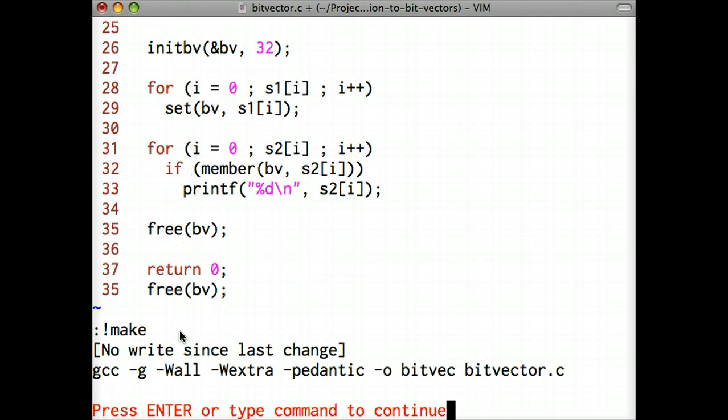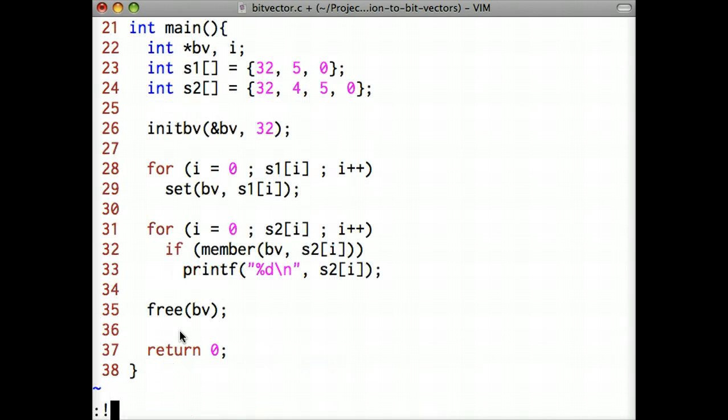Let's compile and execute the program. We expect the values 32 and 5 to be printed out, since they are both in S1 and S2.